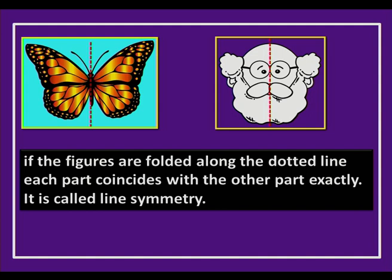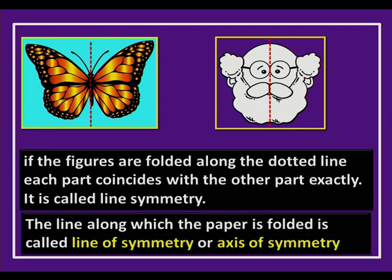Take a look at the image of this person. Drawing a vertical line shows that if you fold along it, the two halves exactly coincide. These objects look beautiful because they are symmetric. If figures are folded along a dotted line such that each part coincides with the other exactly, then it is called line symmetry.